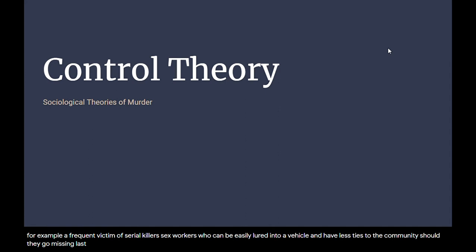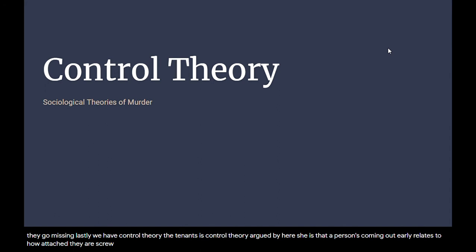Lastly, we have control theory. The tenets of control theory argue that a person's criminality relates to how attached and committed they are to conventional institutions, beliefs, and groups. The less commitment there is, the more likely someone is able to commit a violent crime.